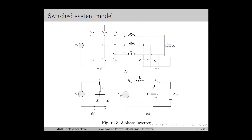We denote this as mode 1 of the inverter. There are three legs for the inverter and each leg can have two switching possibilities, giving a total of 8 switching configurations. Out of these, the configurations where S1, S2, and S3 are all on, or S1, S2, S3 are all off, are excluded. So there will be a total of 6 switching configurations, which results in 6 modes.